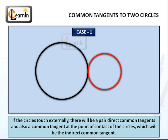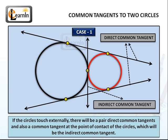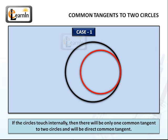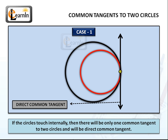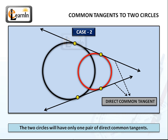Now let's go back to the case of two circles touching at one point. If the two circles touch externally, there will be a pair of direct common tangents and also a common tangent at the point of contact, which will be an indirect common tangent. When the two circles touch internally, there will be only one common tangent — a direct common tangent at the point of contact. In the case where the two circles intersect at two points, there is only one pair of direct common tangents and no indirect common tangents. So those are the many cases where common tangents exist between two circles.